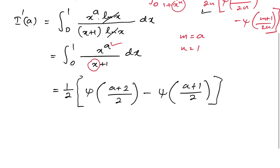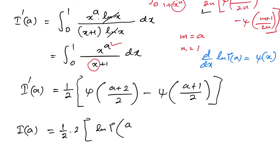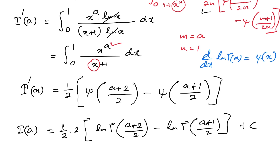Then this is I'(a), and I am going to integrate with respect to a. We know the derivative of the natural log of gamma(x) is the digamma function, so integrating the digamma function gives the natural log of the gamma function. Therefore I(a) equals 1 over 2 times 2 — dividing by the coefficient one-half means multiplying by 2 — giving natural log of gamma((a+2)/2) minus natural log of gamma((a+1)/2) plus a constant C.